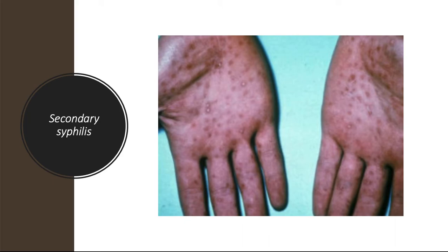Syphilis is a multi-system infection and the patient is very infectious during this stage. Systemic symptoms may include fever, headache, malaise, myalgia, arthralgia, and lymphadenopathy. Other affected organs can include the liver, kidney, central nervous system, joints, and eyes.